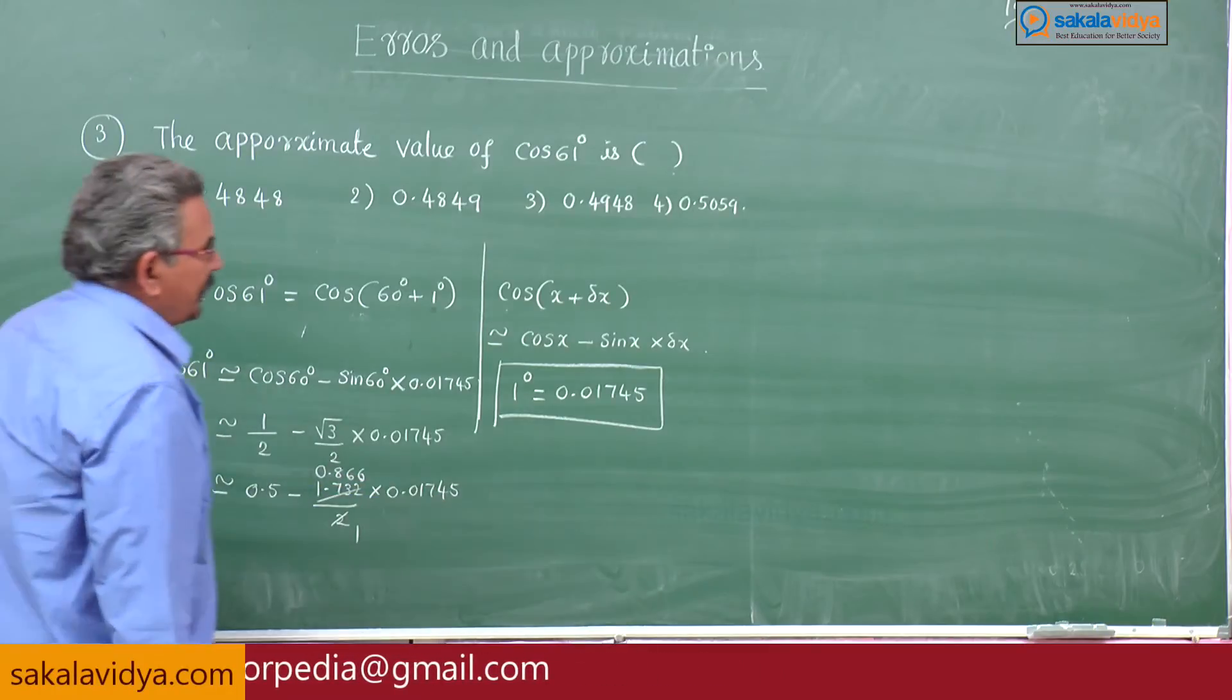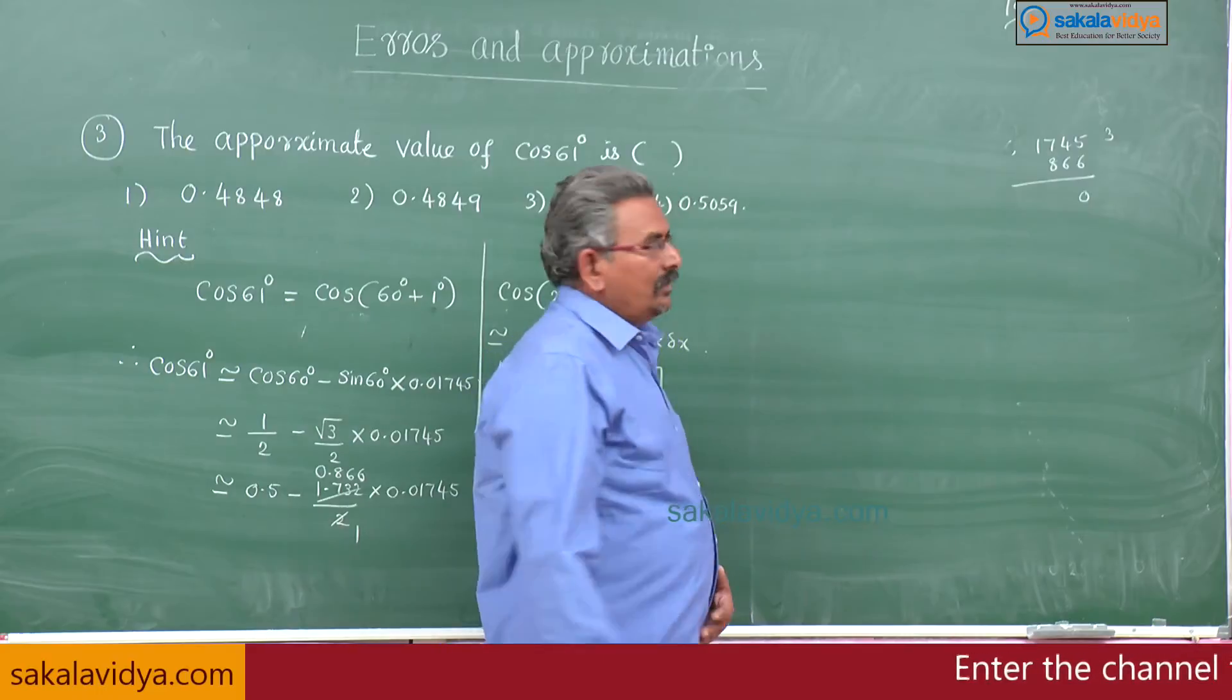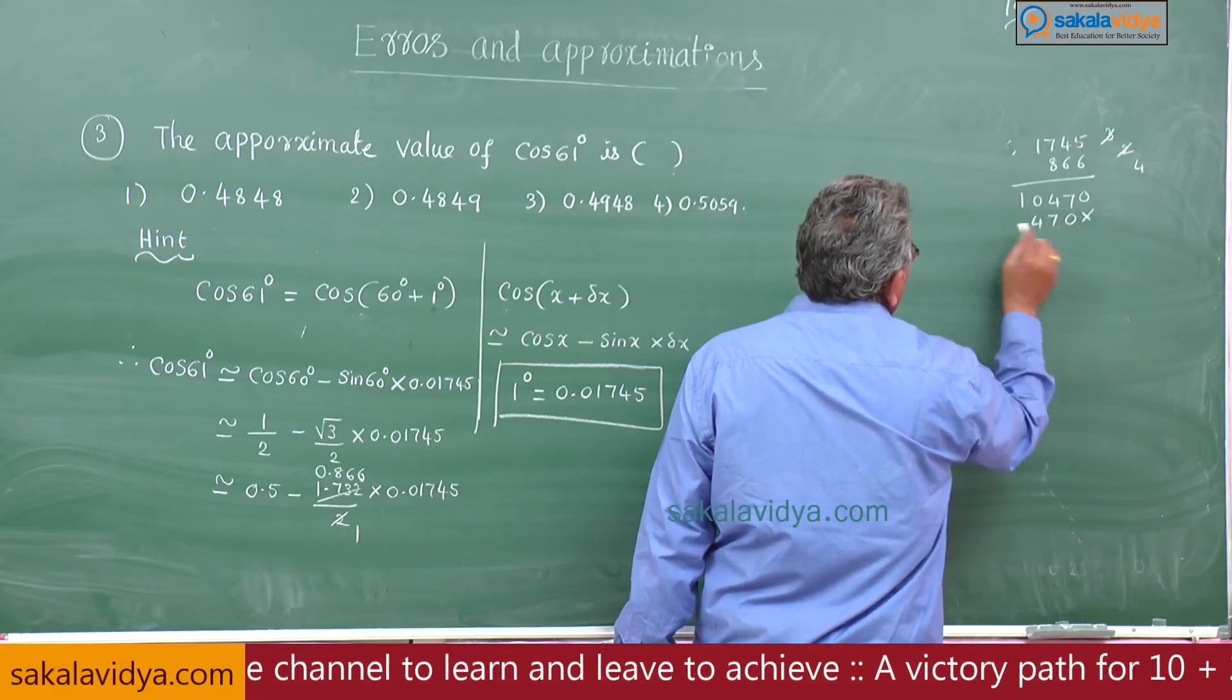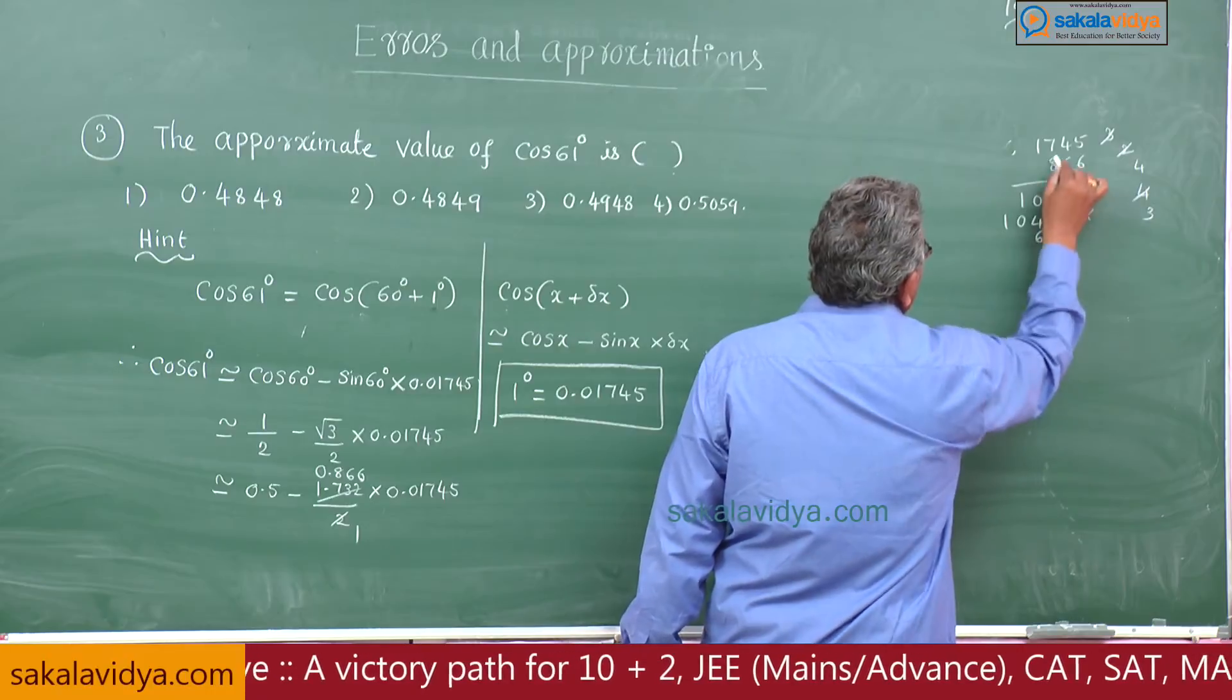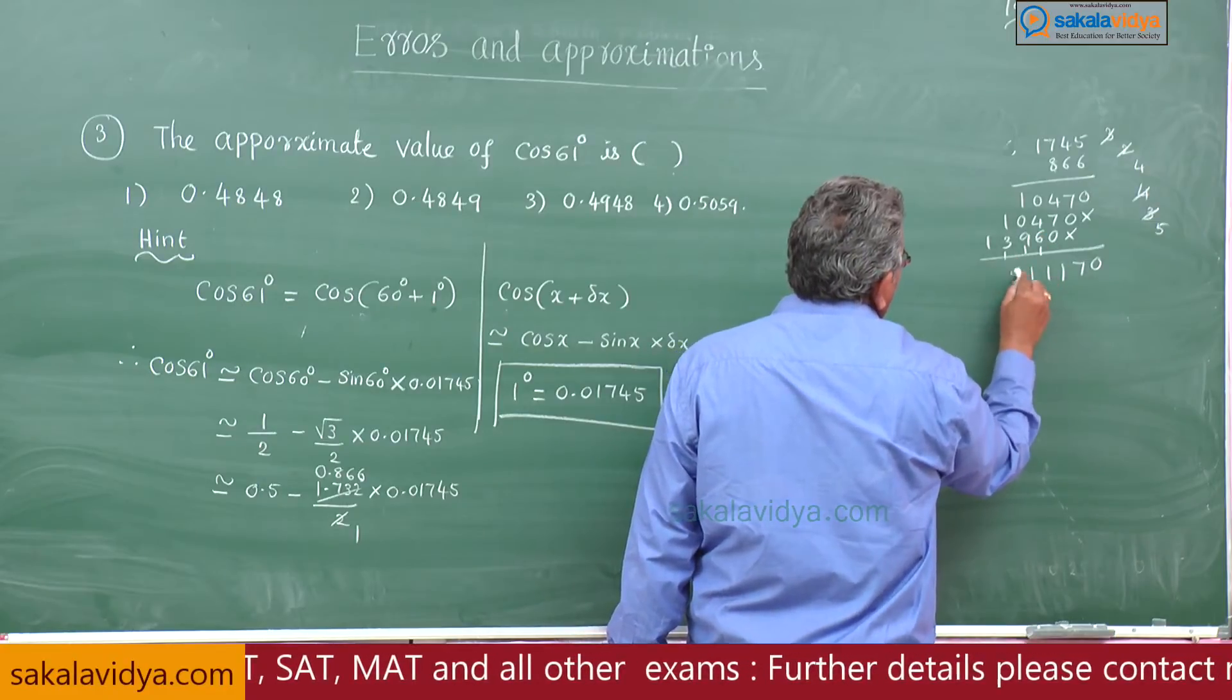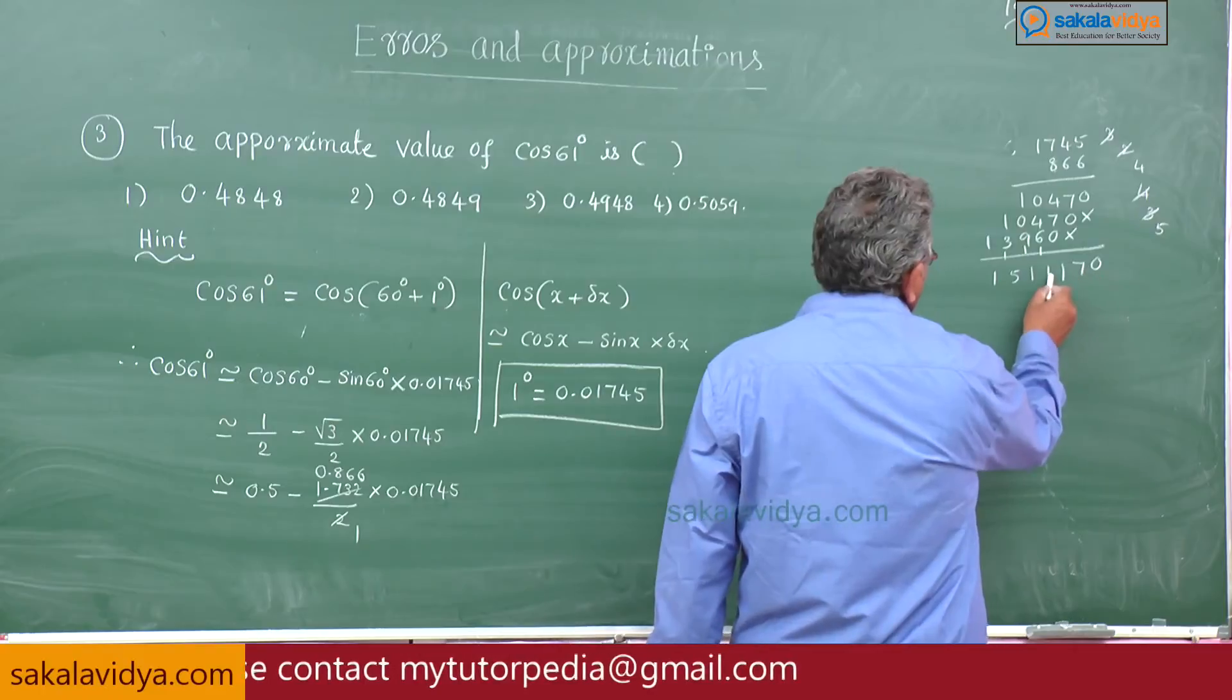You have to multiply these two. Let us multiply: 1745 multiply 866, 6630, 2742, 44, 10, 07, 40, 36, 59, 99, 13, 13, 07, 11, 11, 11, 5, 15. Here how many decimal points? 1, 2, 3, 4, 5, 8. 1, 2, 3, 4, 5, 6, 7, 8.